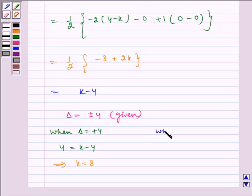Now, when area is equal to minus 4, then minus 4 is equal to k minus 4, which implies k is equal to 0.